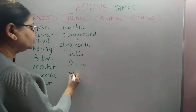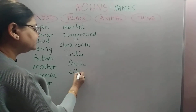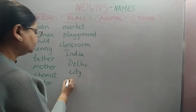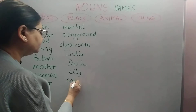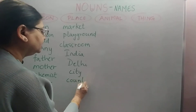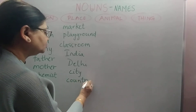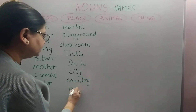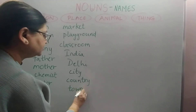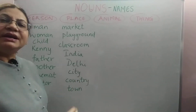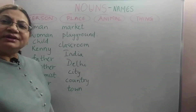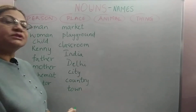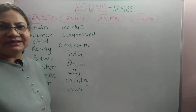Or it could be just city — city itself is a noun. Or country — country is also a noun. Town is a place and is also a noun, and the name of the town could be anything.